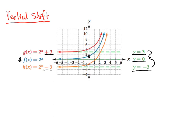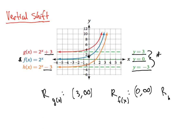The domain remains the same for each of these — a vertical shift does not affect the domain. A vertical shift does affect the asymptote and the range. The range for g of x is going to be from 3 to infinity. The range for f of x is 0 to infinity. And the range for h of x is negative 3 to infinity. So the range is affected by a vertical shift, but not the domain.